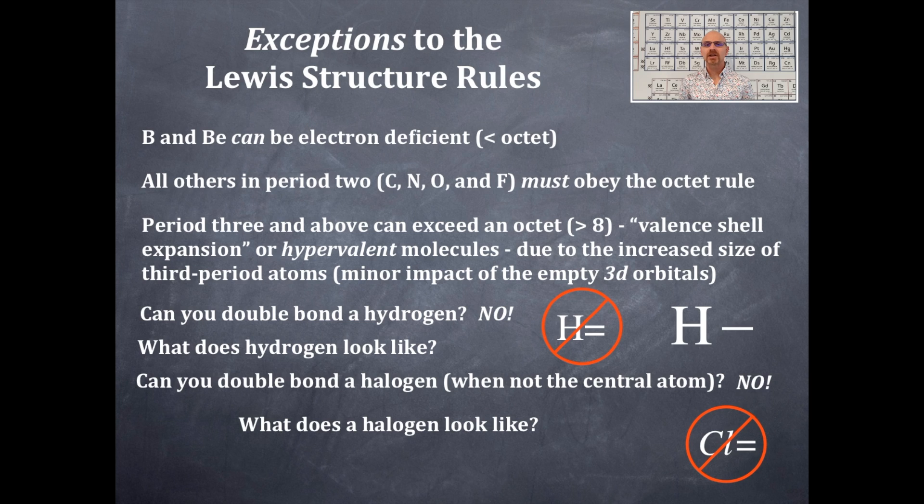What does a halogen look like when it is not the central element? It looks like this. That is a single bond and three sets of lone pairs of electrons. It's very simple. I see halogens double bonded in Lewis dot structures all the time and it just makes me go crazy. Don't do that.